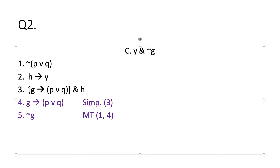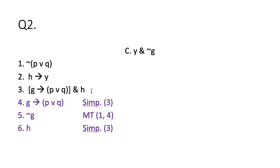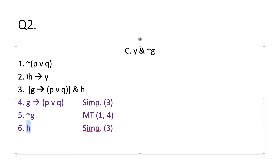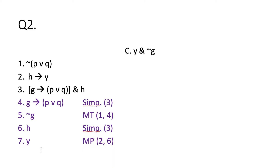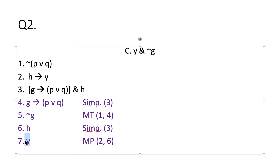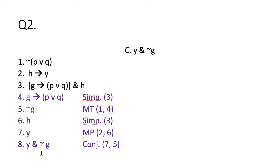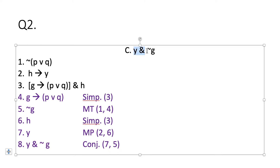Now I'm going to return to the simplification of line three. I'm going to simplify it again to get the other conjunct, H, on its own. Now it's obvious: I've got on line two 'if H then Y', and I've got H on line six, so I can show by modus ponens that Y is necessarily true. I put MP, cite lines two and six, and I've got Y. Now I have not G on line five and Y on line seven, so I put them together using the rule of conjunction to give me my conclusion.